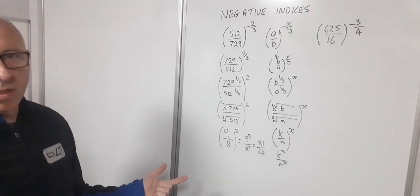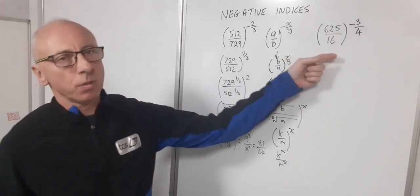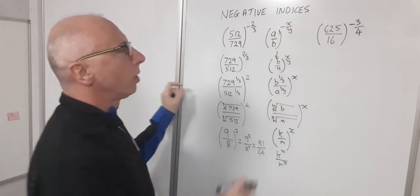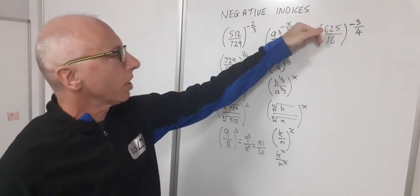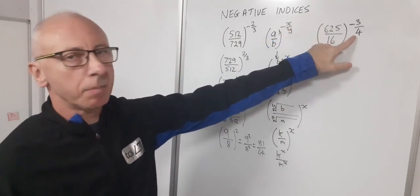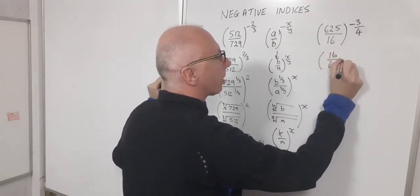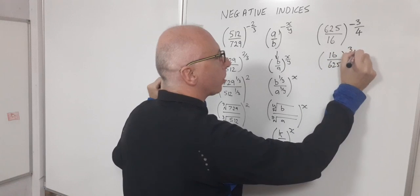And that's where I'm going to leave that one there. Now let's do this one. So what does this one come to? Well first of all take the reciprocal of inside the bracket and get rid of the minus sign. So now I've got 16 over 625 to the power of 3 quarters.